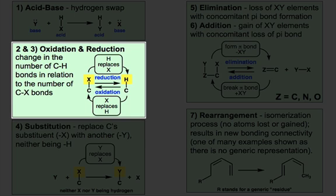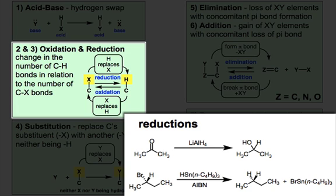Two and three are oxidation and reduction, and these reactions involve the replacement of a bond to a heteroatom, which you see on the left here as CX, to a bond to hydrogen, which you see as CH. So the replacement of CX for CH is called reduction, because it corresponds to a reduction in the oxidation state of the carbon atom.